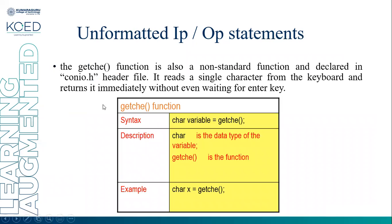Next, we discuss the getch function. This is a non-standard function declared in the conio.h header file. It reads a single character from the keyboard and returns immediately without waiting for the Enter key. When the key is entered, getch will immediately echo it on the screen. The syntax is: char variable = getch.